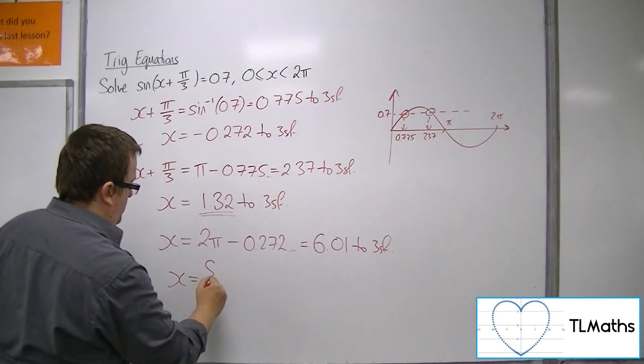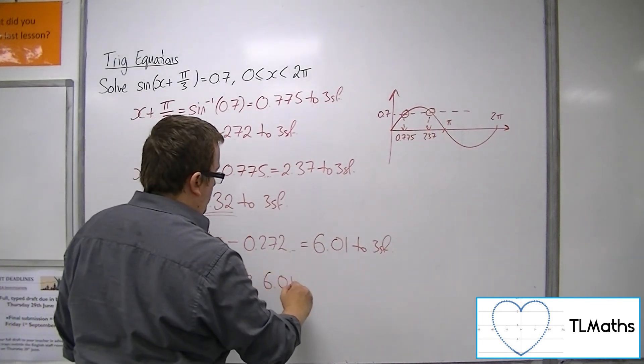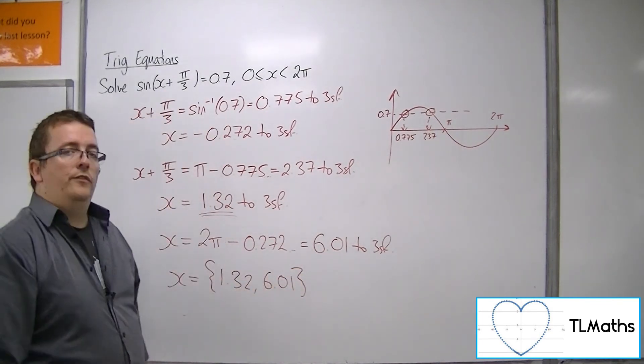So the two solutions are 1.32 and 6.01 to 3 significant figures.